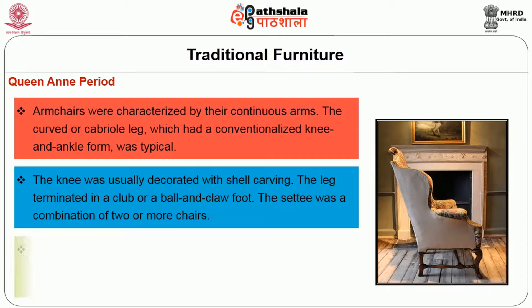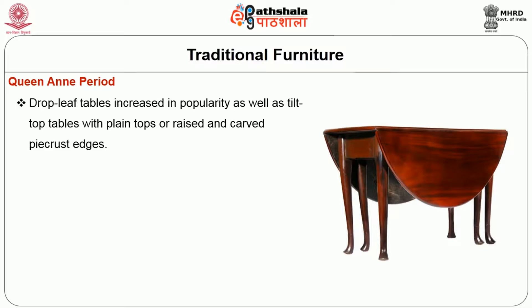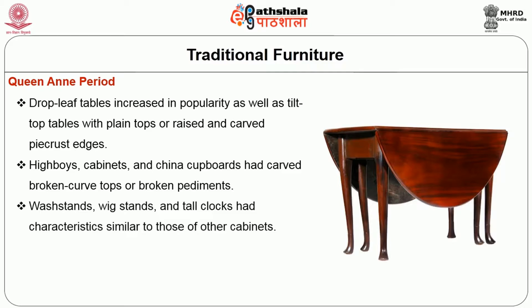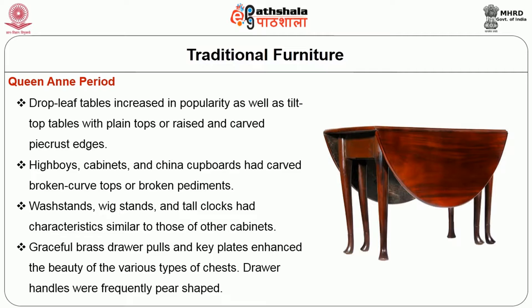Fine needlepoint and tapestries were used for upholstery. Card playing and tea drinking were favorite pastimes, so naturally a variety of small tables were designed. Drop leaf tables increased in popularity, as well as tilt top tables with plain tops or raised and carved pie crust edges. High boys, cabinets, and china cupboards had carved broken curved tops or broken pediments. Washstands, wick stands, and tall clocks had characteristics similar to those of other cabinets. Graceful brass drawer pulls and key plates enhanced the beauty of the various types of chests; drawer handles were frequently pear-shaped.